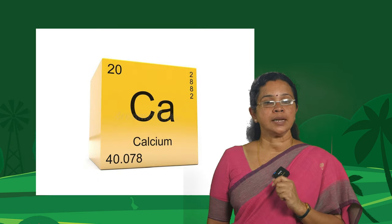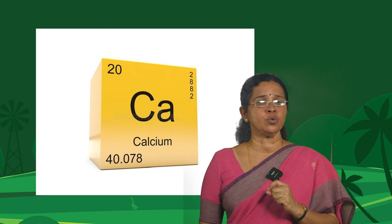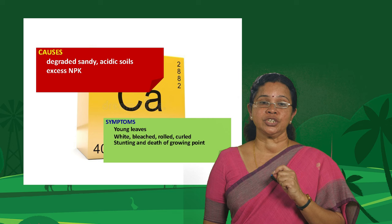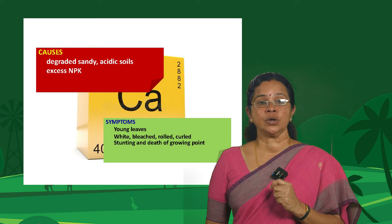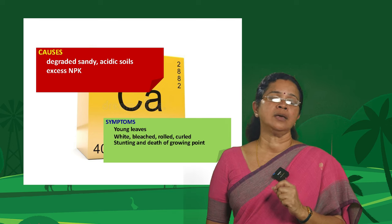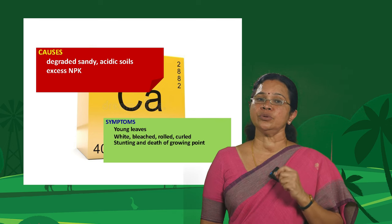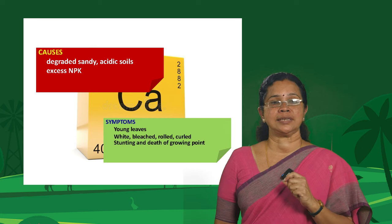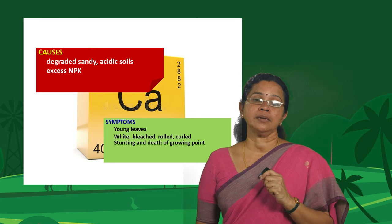Coming to calcium — which has a very typical role in cell wall formation and cell division. Causes include degraded sandy acidic soils and excess NPK application. Our focus is always on N, P and K, and we tend to forget the secondary nutrients and micronutrients — so excess application of NPK fertilizers can lead to calcium deficiency. Calcium is a typical immobile element in plants, so symptoms naturally appear first in the younger leaves or leaves at the tip of the plant.